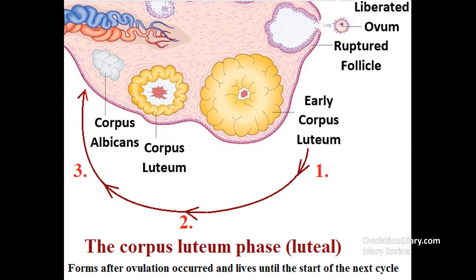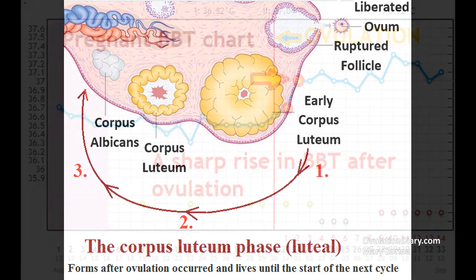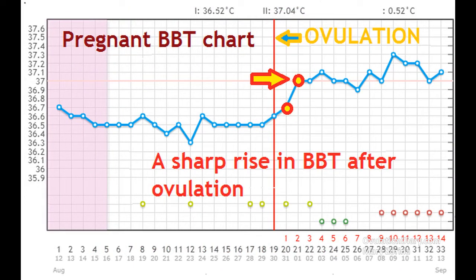The corpus luteum is formed after the release of the egg, in place of the bursting follicle, and after this moment the basal body temperature begins to rise. It is interesting that women can have both a sharp, spasmodic increase in BBT after ovulation and a gradual one. During normal hormone function, the basal body temperature will be established in the second phase within three days.